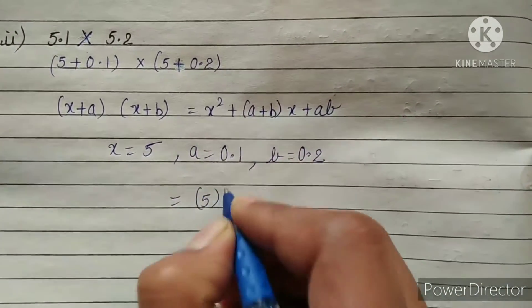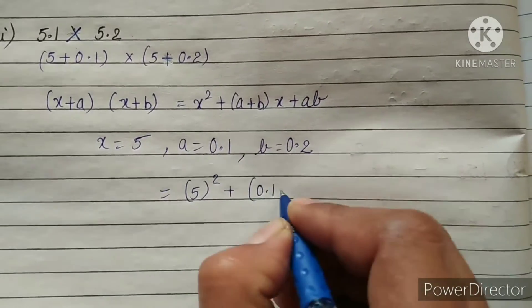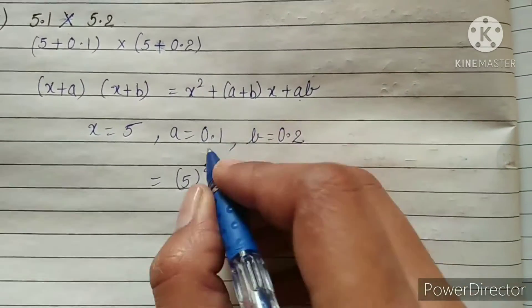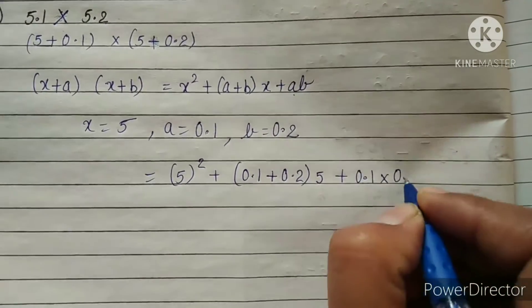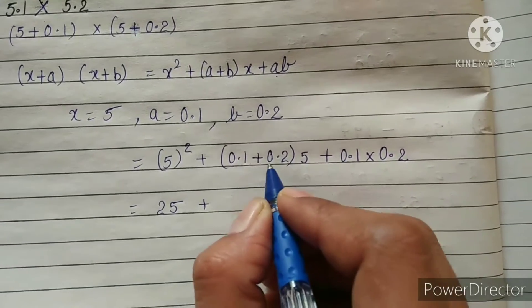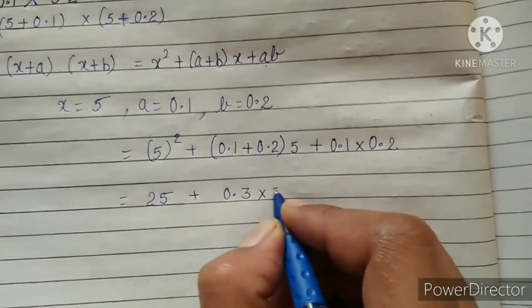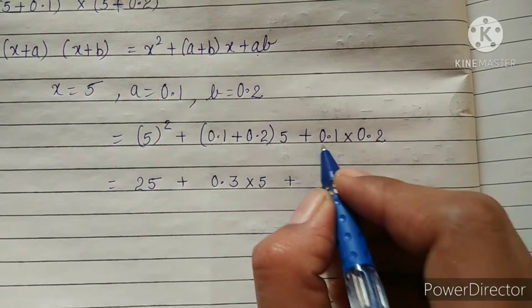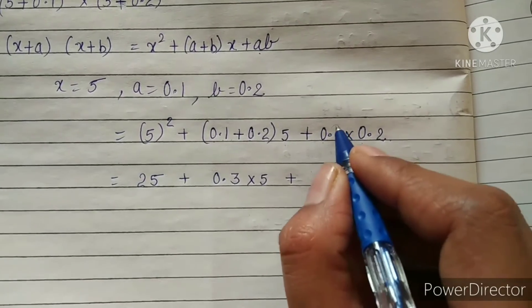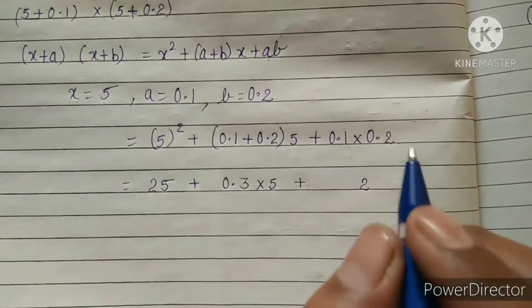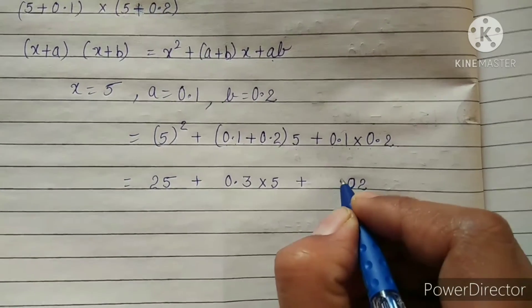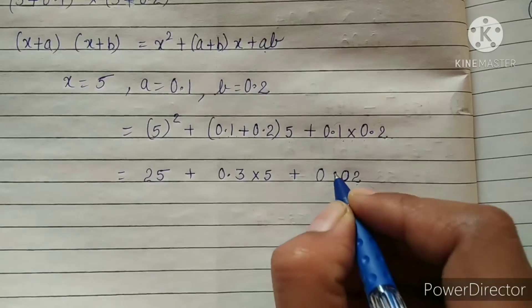Substituting: x squared means 5 squared, plus a plus b which is 0.1 plus 0.2, multiplied by x which is 5, plus a times b which is 0.1 multiplied by 0.2. So 5 squared is 25, and 0.1 plus 0.2 is 0.3, multiplied by 5. For 0.1 times 0.2: 1 times 2 is 2; after decimal 1 plus 1 value means 2 decimal places, giving 0.02.